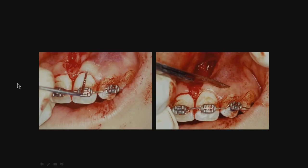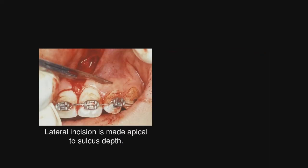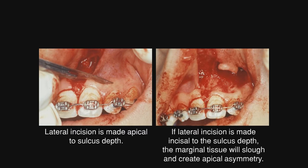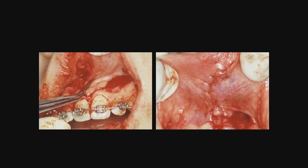The initial lateral incision is necessarily made apical to the sulcus depth — you will see in a moment the reason for that. So here you see us making the lateral incision apical to the sulcus depth, and then the flap is reflected. But if the lateral incision is made into the sulcus depth, the marginal tissue incisal to that will slough, and you will end up with a gingival asymmetry that is most unesthetic.